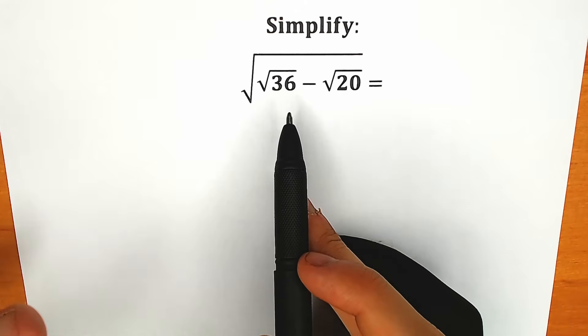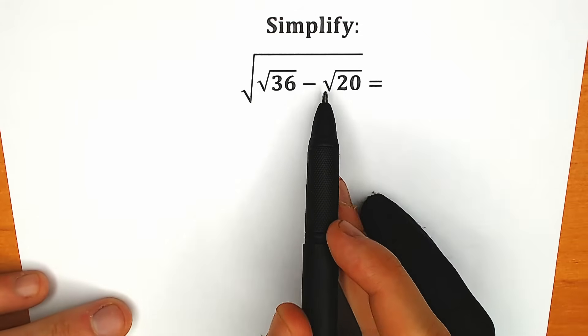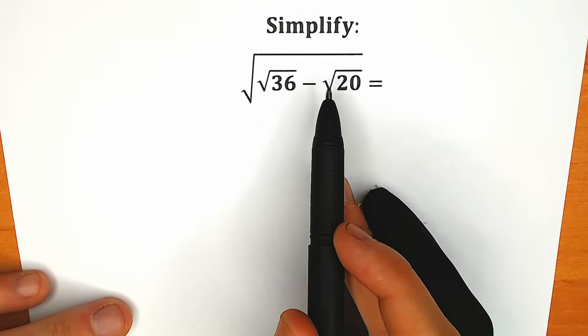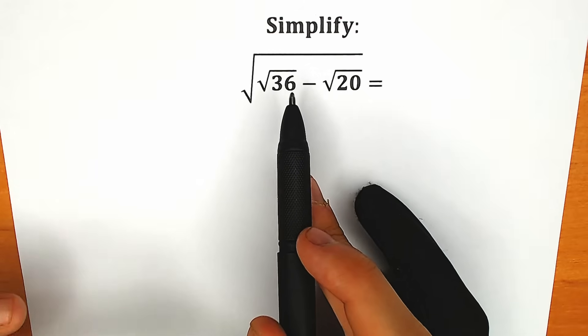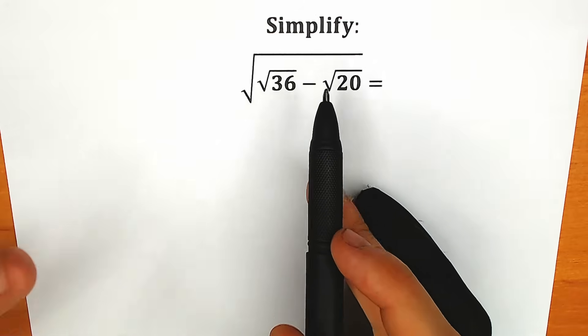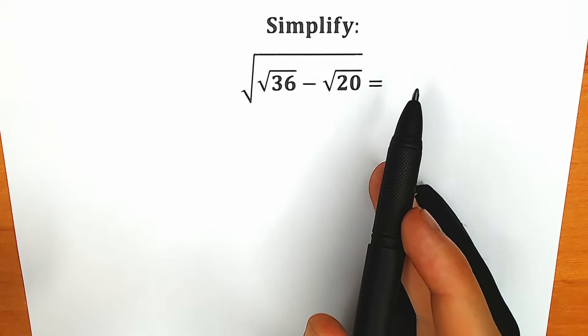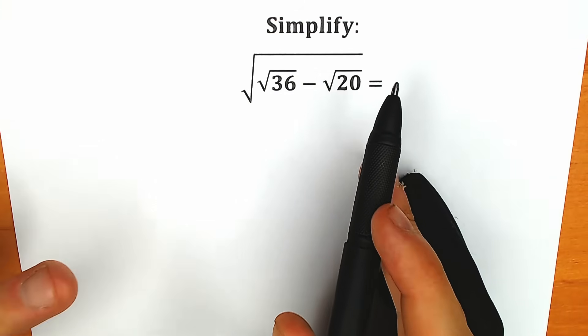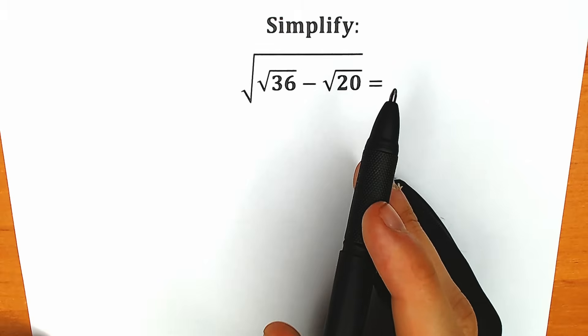A lot of students might be thinking maybe we can subtract it: square root of 36 minus square root of 20 equals square root of 16. This is equal to 4, and as a result they write that the correct answer is 4 or 2 — so they go in the wrong way.